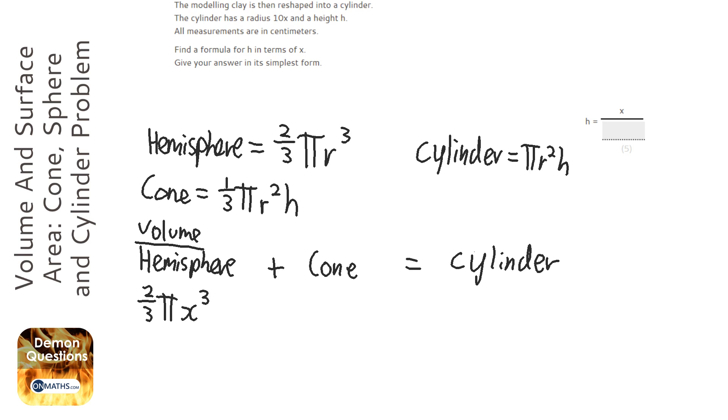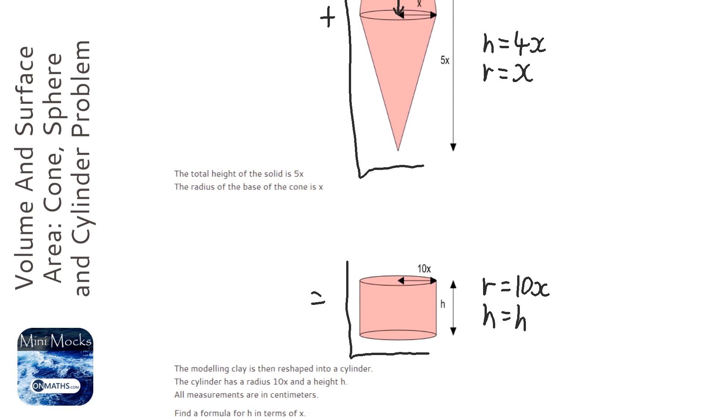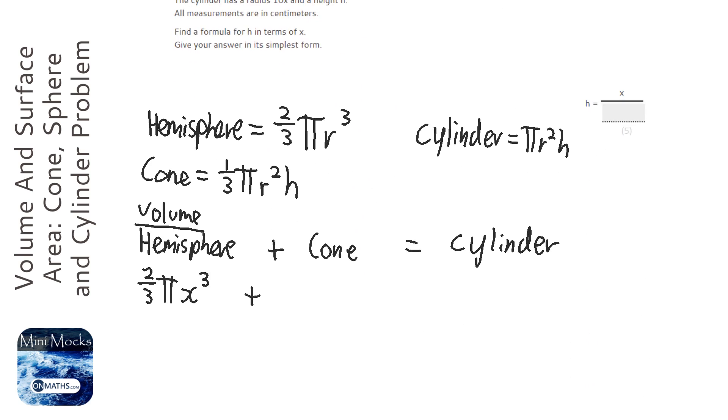So hemisphere is two thirds pi, and we said that x was the radius, so x cubed. Brilliant. So plus the cone. Now what did we say the height of the cone was? We said the height of the cone was 4x, so it's going to be one third pi x squared because the radius is x, times 4x.